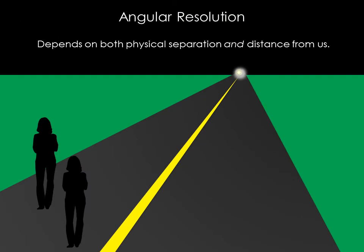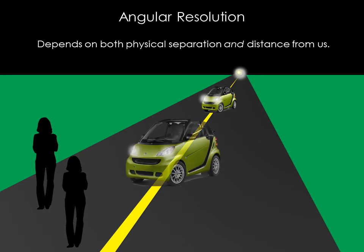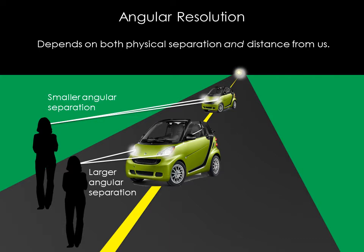The angular separation between two points of light depends on both their actual separation and their distance from us. For example, consider a car in the distance and the same car nearby. The headlights on the car have the same physical separation in both cases, but their angular separation is larger when the car is closer. When the car is far away, we can still see the lights, but they look like one light rather than two.